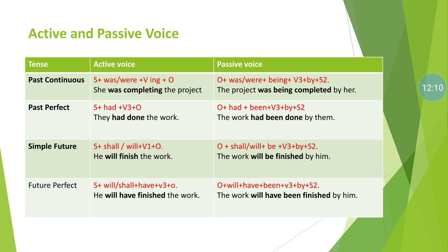Past continuous tense: active structure is subject + was/were + verb+ing + object. For example, 'She was completing the project.' 'Was' indicates past action and 'completing' indicates continuous action — so this is past continuous tense. To transfer to passive: object + was/were + being + V3 + by + subject (second form). So the passive form is 'The project was being completed by her.' 'Was' indicates past, 'being' indicates continuous, and 'completed' is V3.